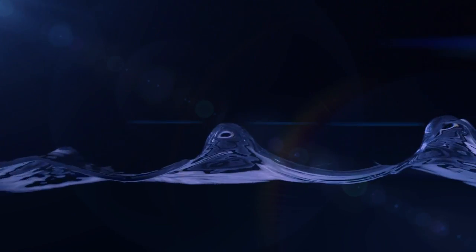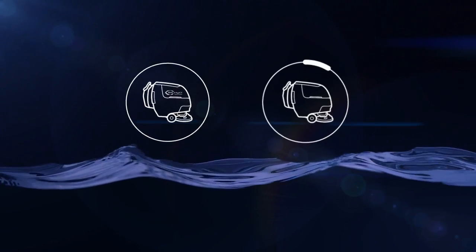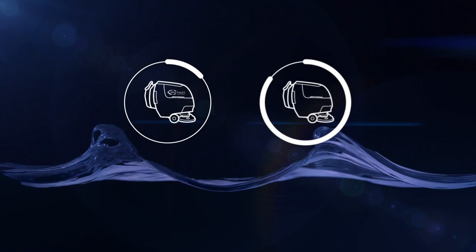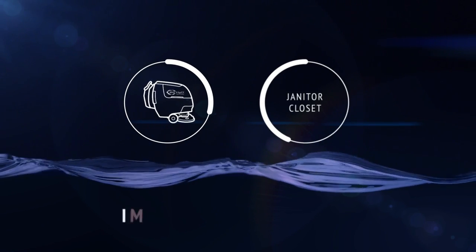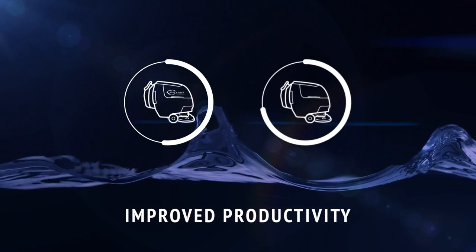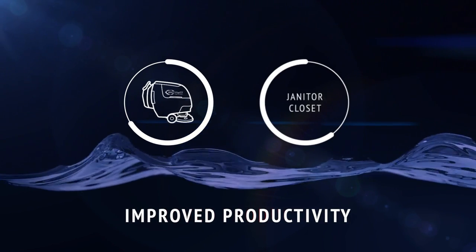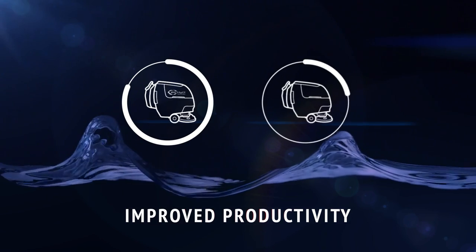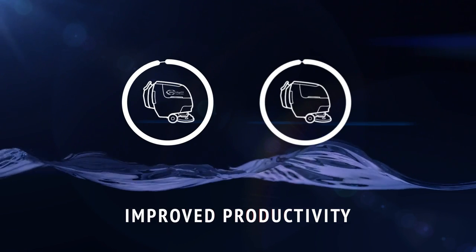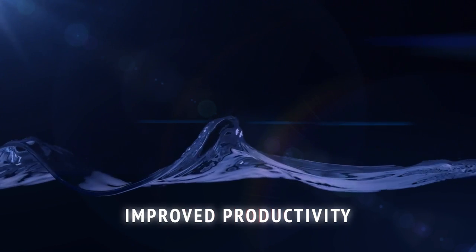EC Water NanoClean equipped floor scrubbers can significantly reduce the water consumption for floor cleaning, which not only means using less water, but also means being able to clean up to three times longer before a trip to the custodial closet to dump and refill the machine, therefore providing significant improvements in productivity.